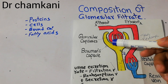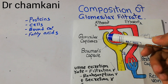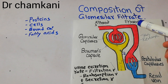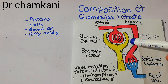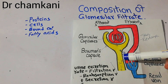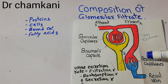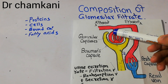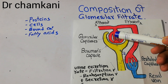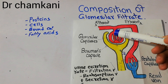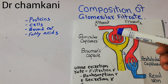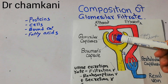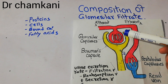The afferent arteriole comes in and divides into capillaries known as the glomerulus. The blood then exits through the efferent arteriole, which divides again into capillaries known as the peritubular capillaries. Once the glomerulus is formed, there is high pressure inside it, due to which filtrates move out of the capillaries and enter the Bowman's capsule.